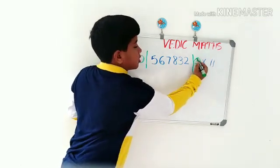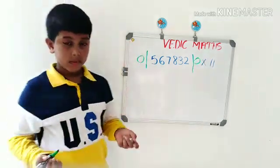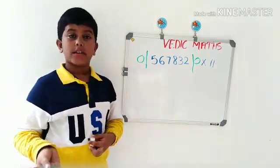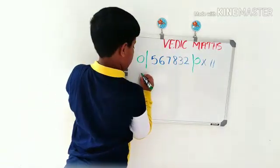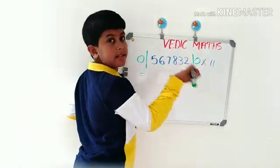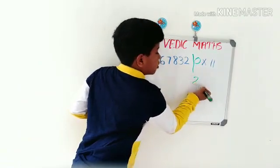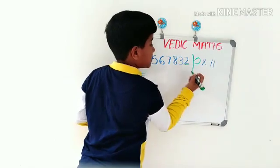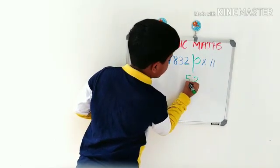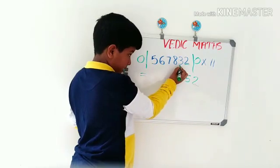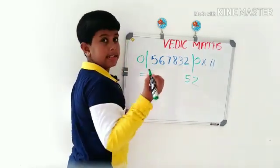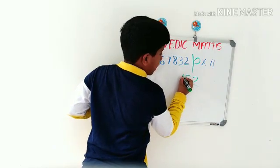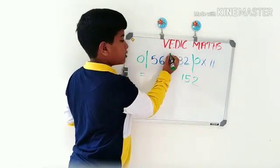Add each digit of the number to the digit on the right side: 2 plus 0 is 2, 3 plus 2 is 5, 8 plus 3 is 11. So we should put 1 here and carry over to the next number.